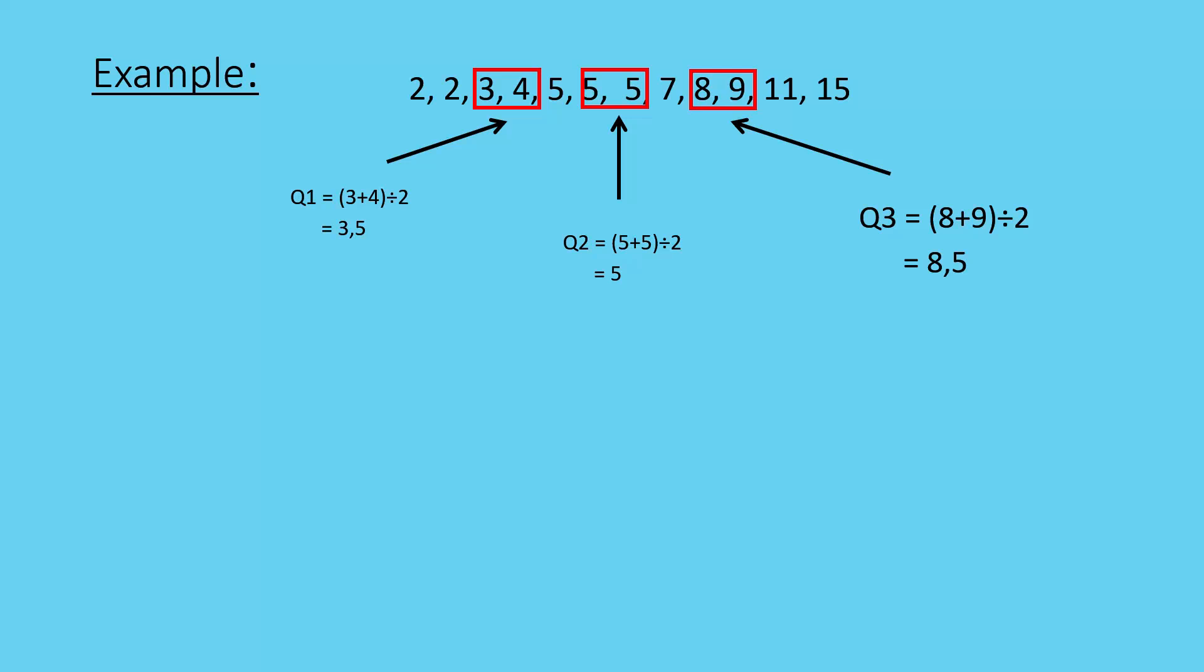Once again, I need to look at my interquartile range. I just take those two numbers, my upper quartile minus my lower quartile. Q3 minus Q1. And that gives me my interquartile range of 5.